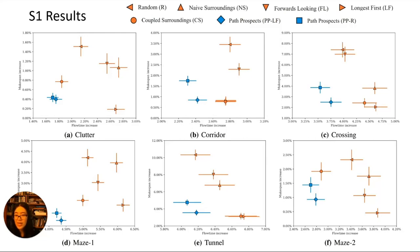The fact that our method outperforms the two surrounding heuristics shows that the area in which we count obstacles is important — just looking nearby doesn't work as well. Comparing against the forwards-looking heuristic shows that it's important to count effective obstacles so that we're explicitly considering the coupling between a robot and its environment.